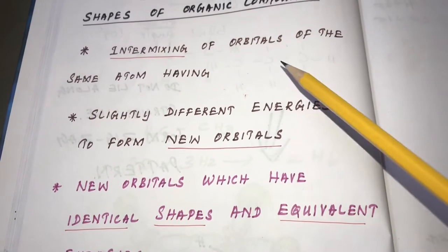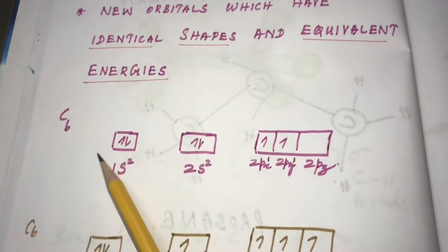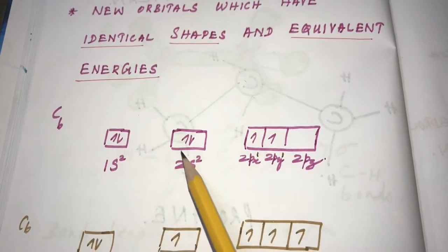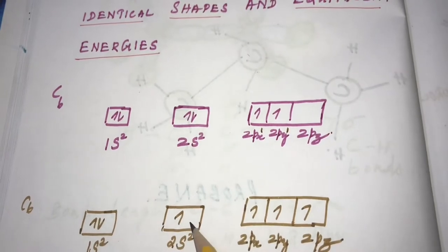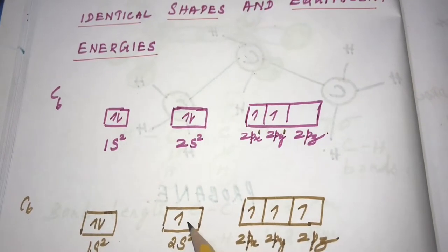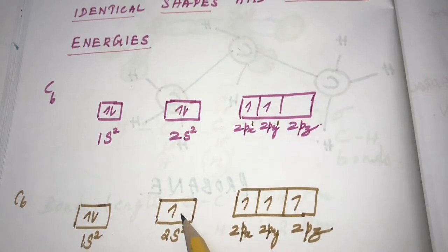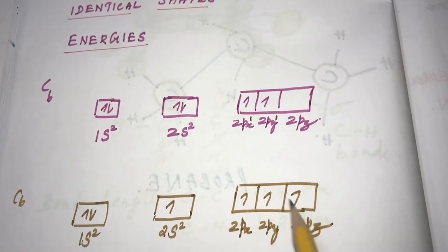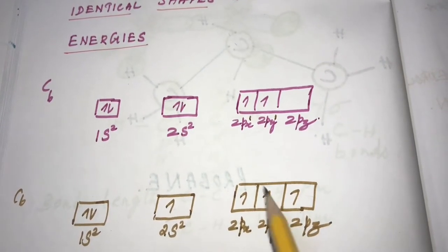To explain hybridization, consider a carbon atom of atomic number 6. In the ground state, the configuration is 1s2, 2s2, 2p2. In the excited state, the 2s electron absorbs energy and moves to the 2pz orbital, making 4 electrons unpaired — establishing the tetravalency of carbon.